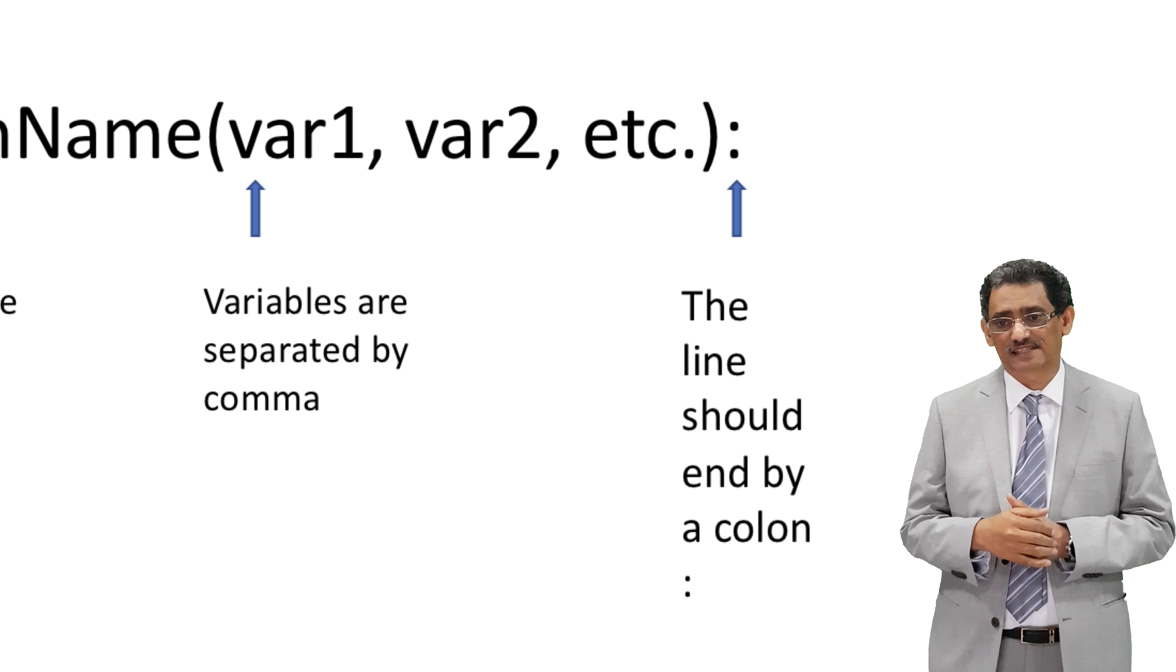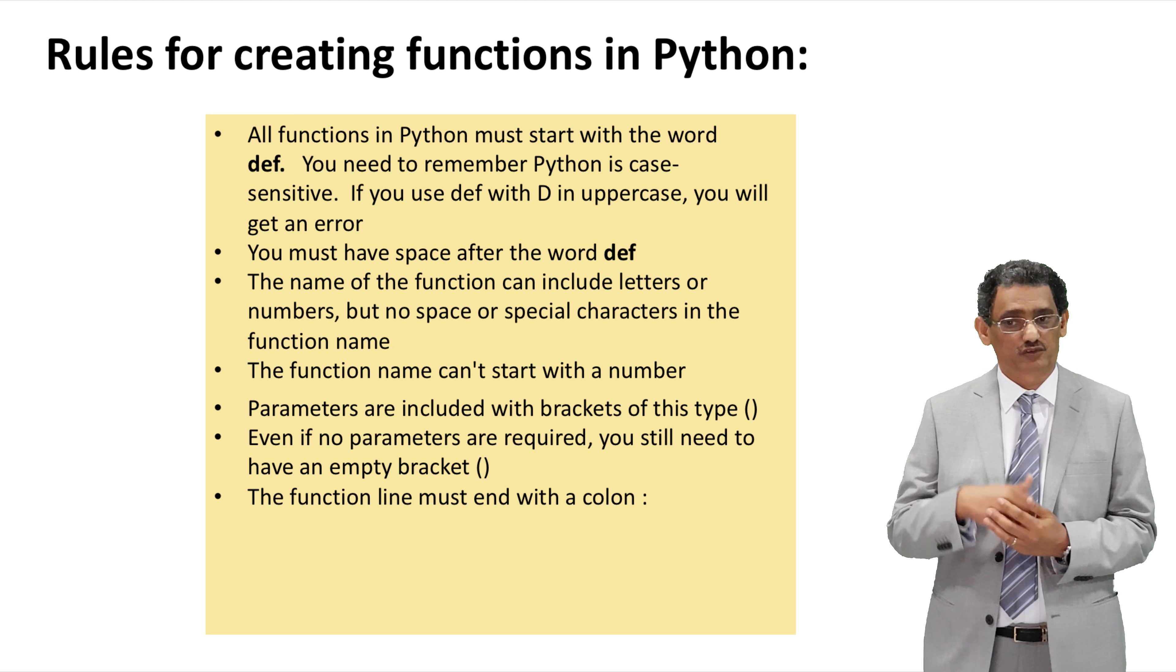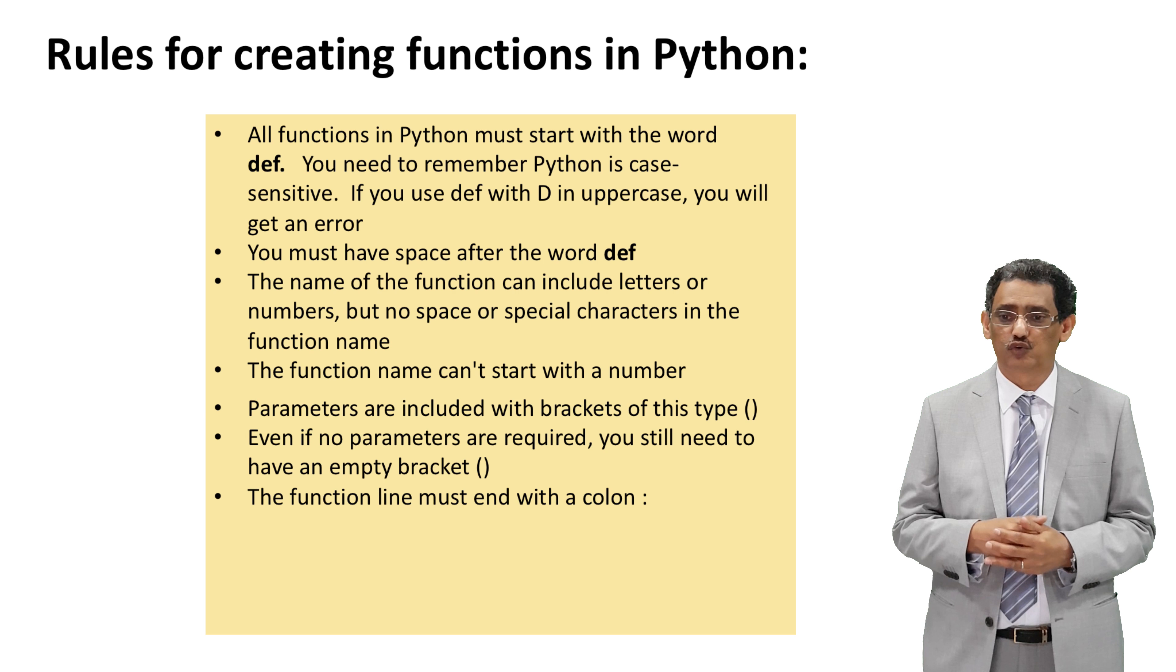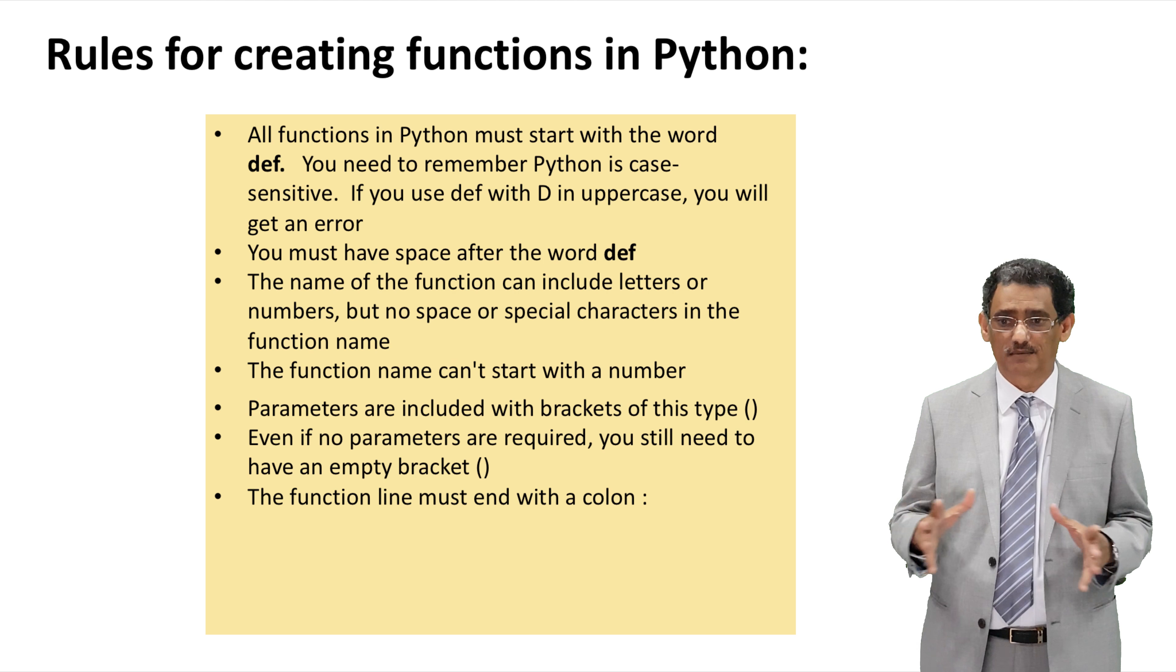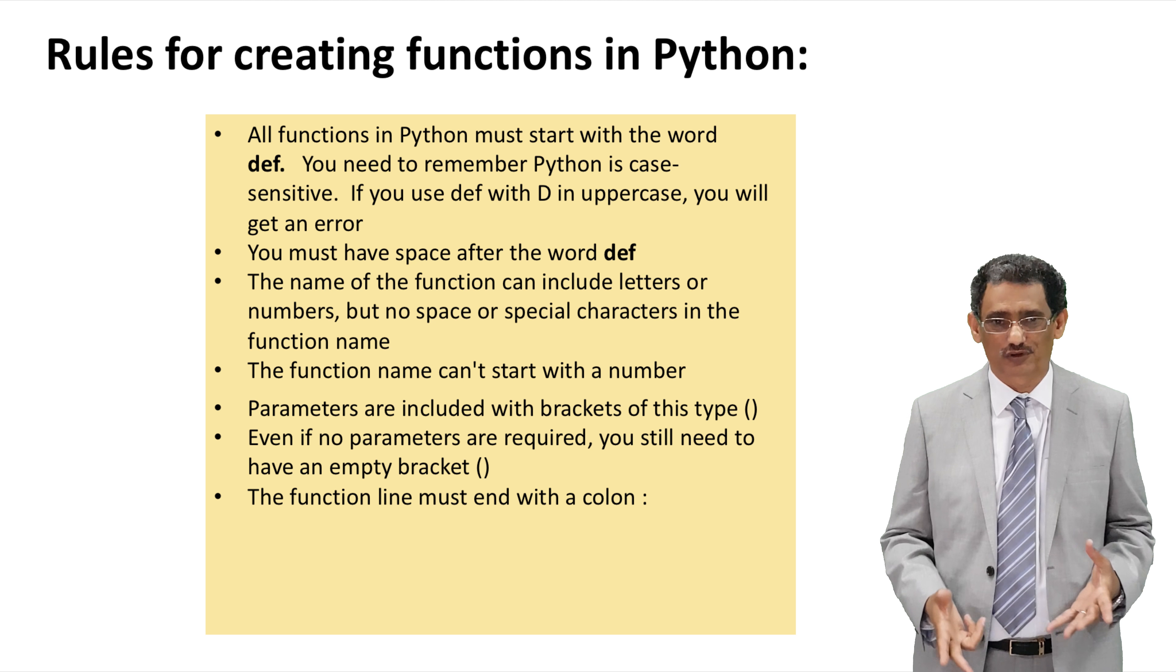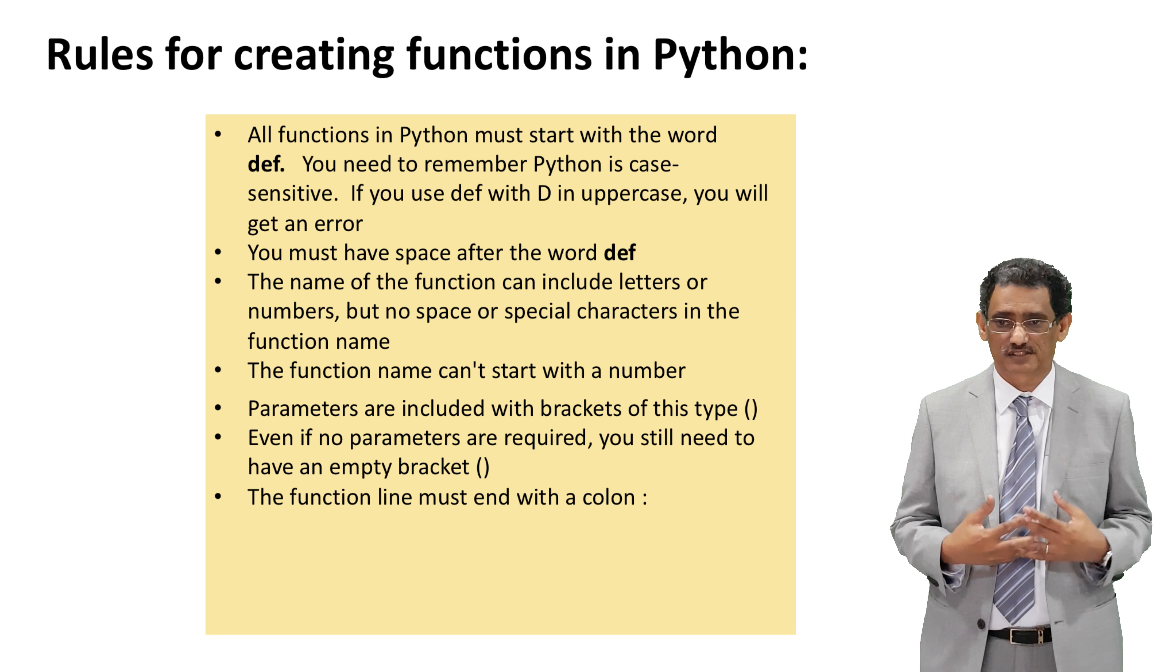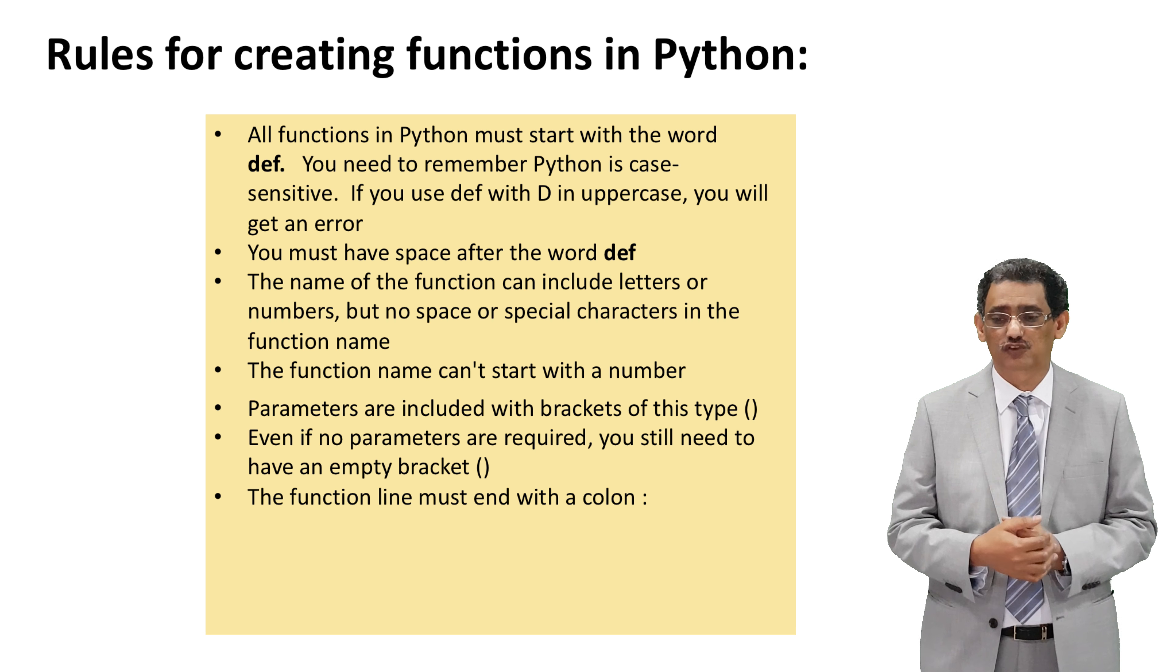Again, when you name your function, you cannot have a space. For example, you cannot call function space one. You should start by def keyword. And there are specific characters you cannot use similar to the variable which restrict you from coming with function name that create confusion to the program code. Confusion comes from using special characters which is already reserved for the programming language or having a space in the function name. You will understand this more by practice. When you practice, you make a mistake, you will find issues, and then you will solve it and you will understand how it works.